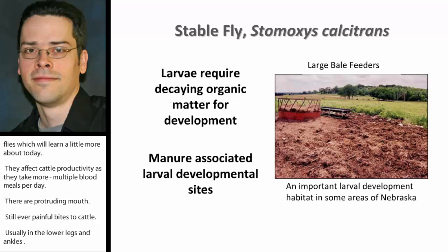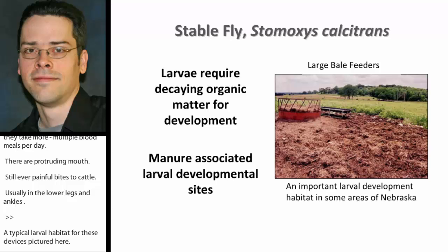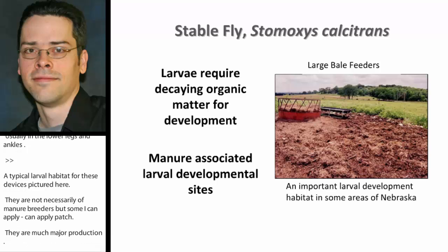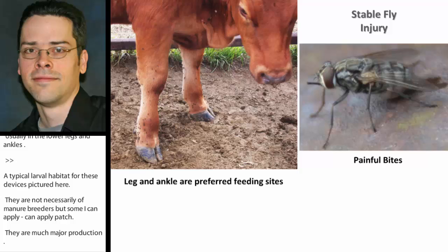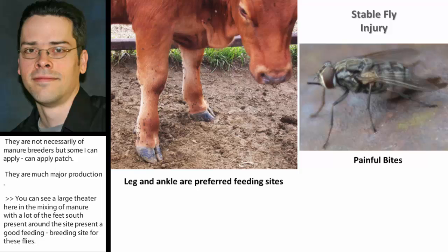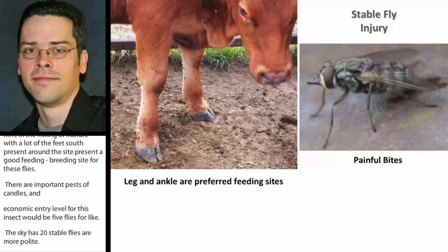Typical larval habitat for these flies is shown here. They're not necessarily obligate manure breeders, but manure-associated larval development sites are a major production source for stable flies, particularly in rangeland environments. A large bale feeder with manure mixed with feedstuffs provides a good breeding site. An economic injury level for this insect would be five flies per leg or more; the cattle shown here have 20 or more stable flies per leg.